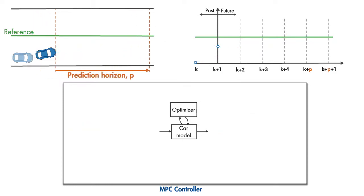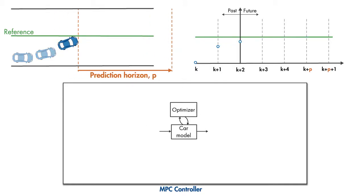Now the prediction horizon shifts forward by one time step and the controller repeats the same cycle of calculations to compute the optimal steering wheel angle for the next time step.